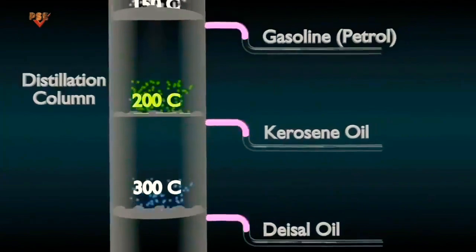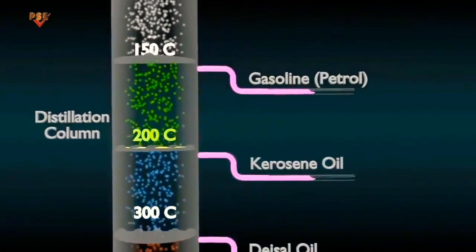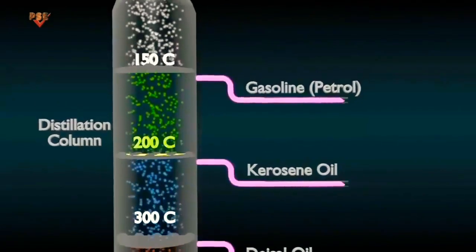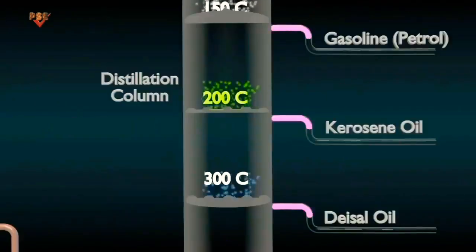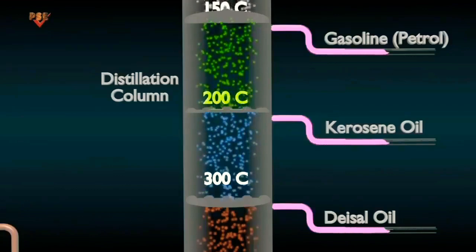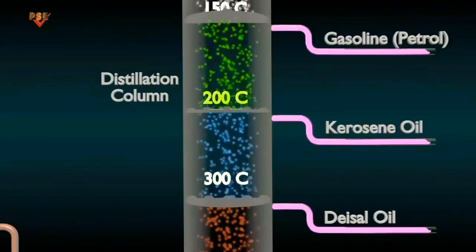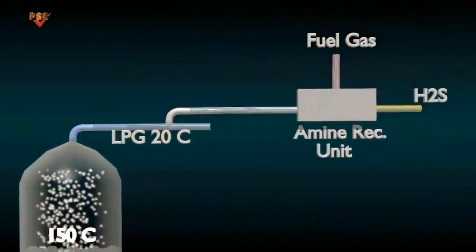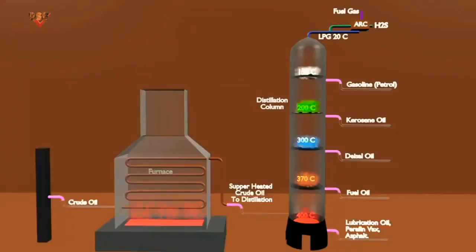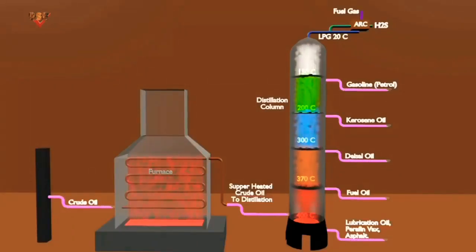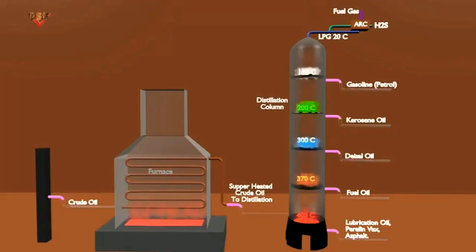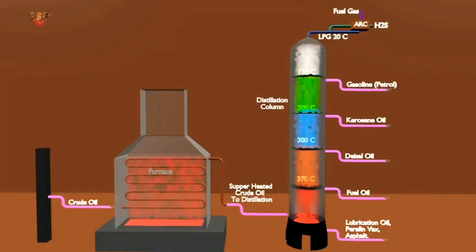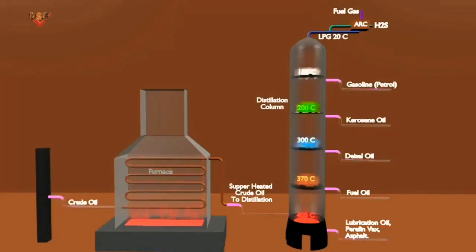Components that are in vapor form rise up the tower through a series of distillation stages. The temperature decreases as the vapors rise through the tower and the components condense. The yield from a distillation tower refers to the relative percentage of each of the separated components, known as product streams.